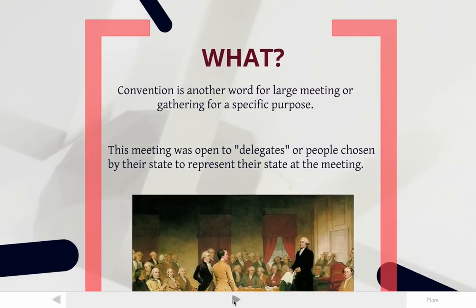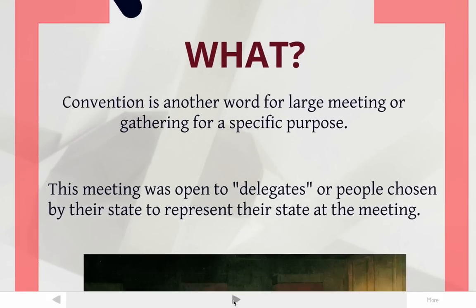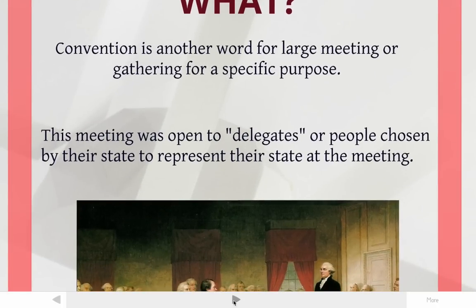So first of all, the what. What is a convention exactly? A convention is simply another word for a large meeting or gathering for a specific purpose. We have a convention center in Hartford, and at the convention center they host different meetings — trade shows, like a boat show, where everyone interested in boats goes. So it's kind of like a large meeting. In this particular meeting, it wasn't to sell boats, but to rewrite the Constitution or to change the government. At this meeting were people called delegates, and delegates are basically the same thing as representatives — they were chosen by their state to represent their state at the meeting.